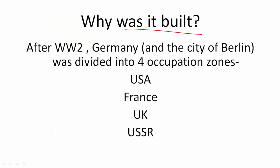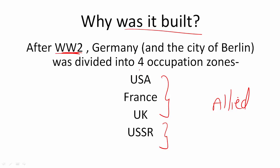Now why was this built? After World War II in 1945, Germany was captured by France, UK, and USA on one side, and on the other side by the USSR. All four countries — the allied powers — captured Germany and divided it into four occupation zones. The city of Berlin was also again divided into four occupation zones by all these four countries, because they were the victors of World War II.